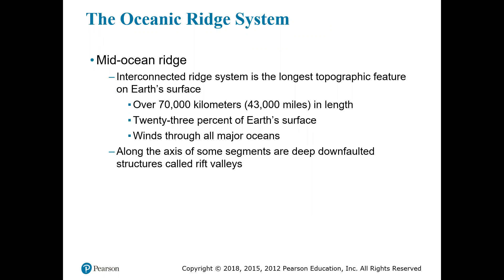The interconnected ridge system is the longest topographic feature on Earth's surface, winding through all major oceans as shown in the figure at the bottom of page 419. Large sections are named based on their locations: the mid-Atlantic ridge, the mid-Indian ridge, and the East Pacific Rise, which doesn't run down the middle of the Pacific but rather along the eastern side, skirting South America.